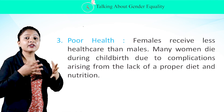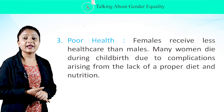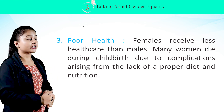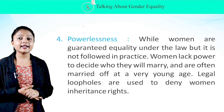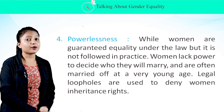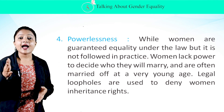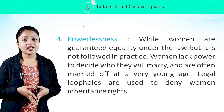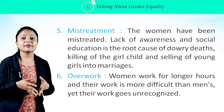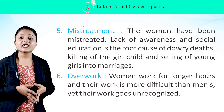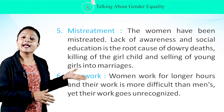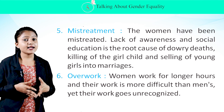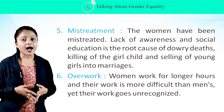Third, poor health. Females receive less healthcare than males, and many women die during childbirth due to complications arising from lack of proper diet and nutrition. Fourth, powerlessness. While women are guaranteed equality under the law, it is not followed in practice. Women lack power to decide whom they will marry and are often married off at a very young age; legal loopholes are used to deny women inheritance rights. Fifth, mistreatment — lack of awareness and social education is the root cause of dowry deaths, killing of girl children, and selling of young girls into marriage. Sixth, overwork — women work longer hours and their work is more difficult than men's, yet their work goes unrecognized.